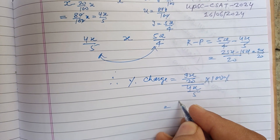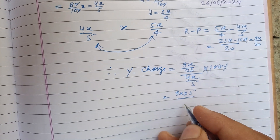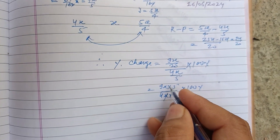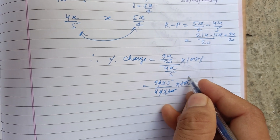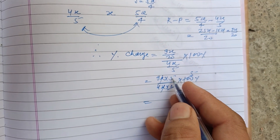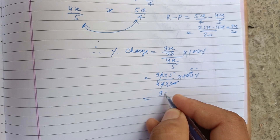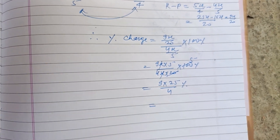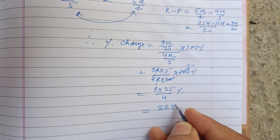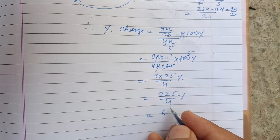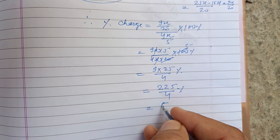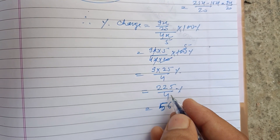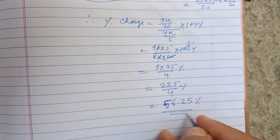So this simplifies to 9X times 5 upon 20 times 4X upon 5, all times 100. Multiplying: 9 times 5 is 45, over 20 times 4 upon 5 — working through the arithmetic: 225 upon 4 percent, and 4 into 6 is 24, carry 1, giving 56.25 percent.